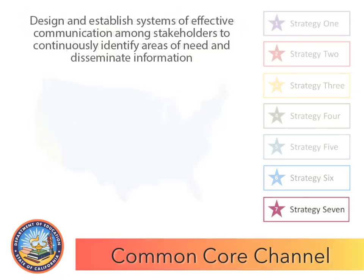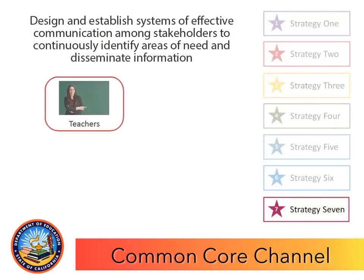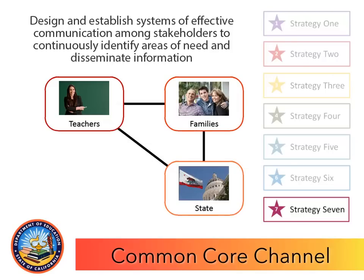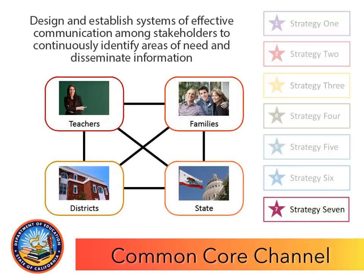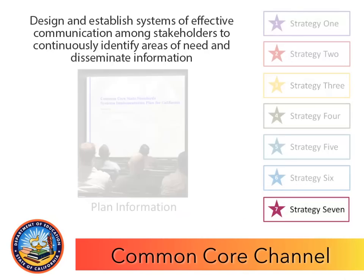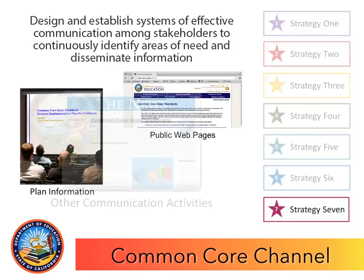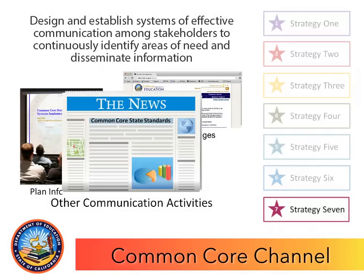Finally, strategy seven is to design and establish systems of effective communication among stakeholders to continuously identify areas of need and disseminate information. This strategy builds strong stakeholder communication systems to support implementation of the standards, including information about this plan, public web pages, and other communication activities.